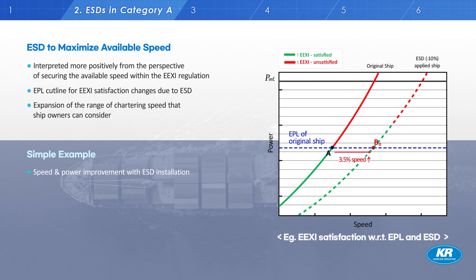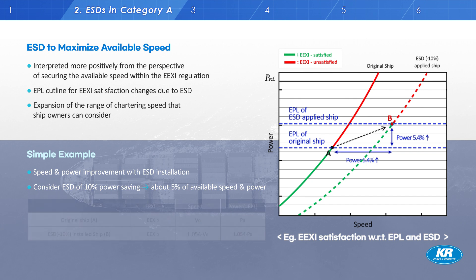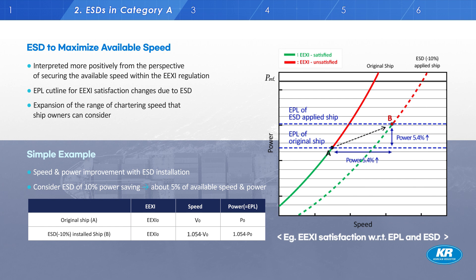Point B0 has a 3.5% lower EEXI than point A, but B0 is not the optimal point for this ship. The maximum speed while satisfying the EEXI is point B. Point A and point B have the same EEXI value, and point B has 5% more margin than point A in terms of speed and power. So the 10% ESD makes a 5% velocity margin. This is a simplified calculation to explain the concept of ESD and EPL, and the detailed numbers may differ.